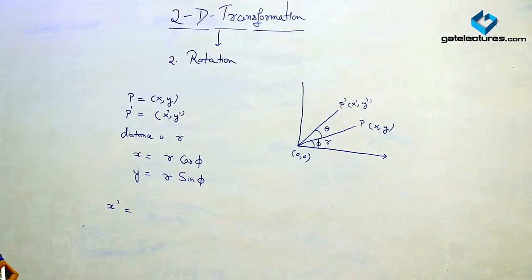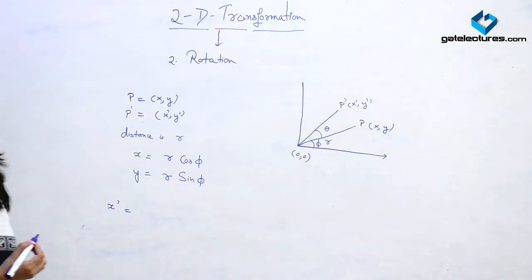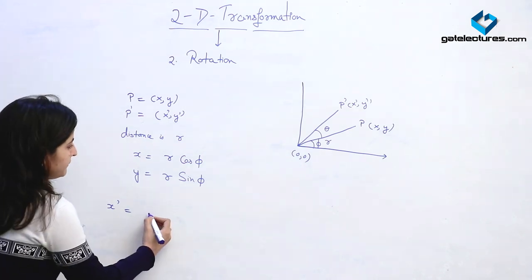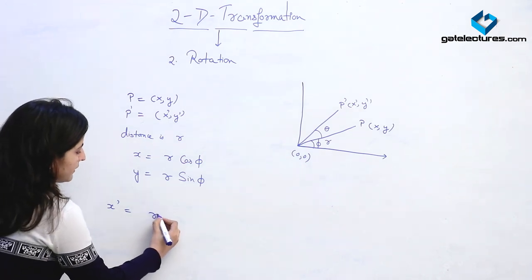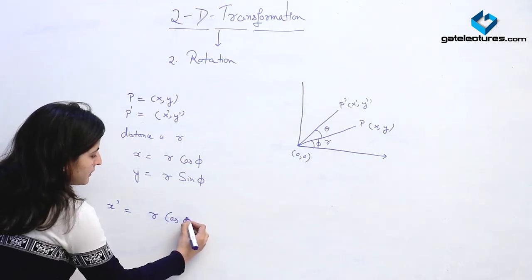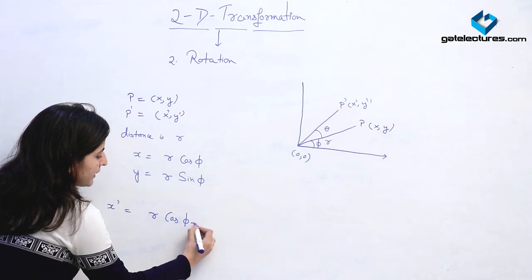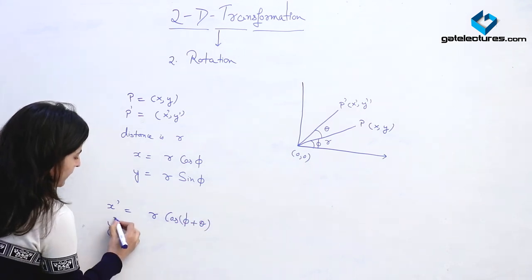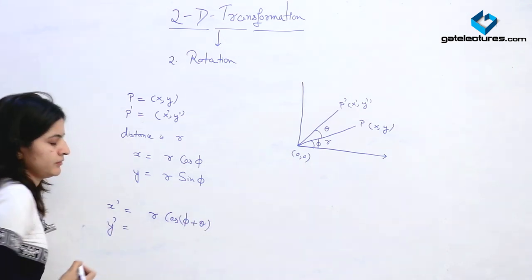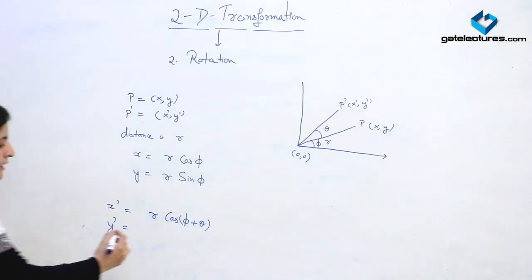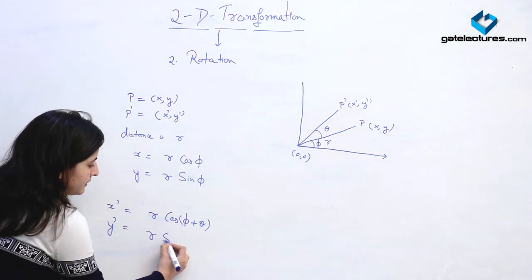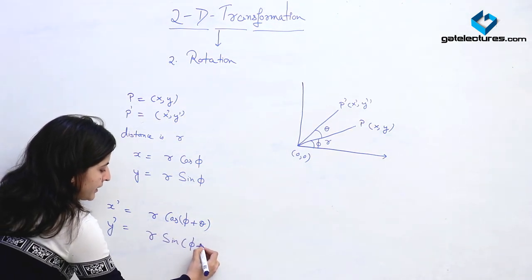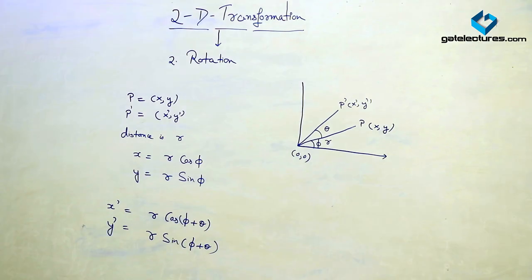Now, when point P is rotated to P dash, the value of x dash will be r cos(phi plus theta), and the value of y dash will be r sin(phi plus theta).